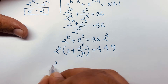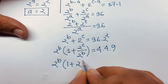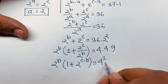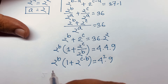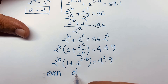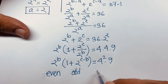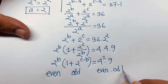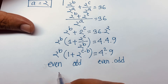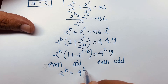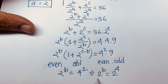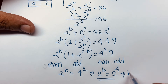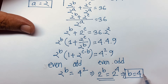Factoring out 2^b: 2^b(1 + 2^(c−b)) = 144 = 4² × 9. Again, 2^b is even and (1 + 2^(c−b)) is odd, so comparing we get 2^b = 4² = 16 = 2^4. Therefore b = 4.